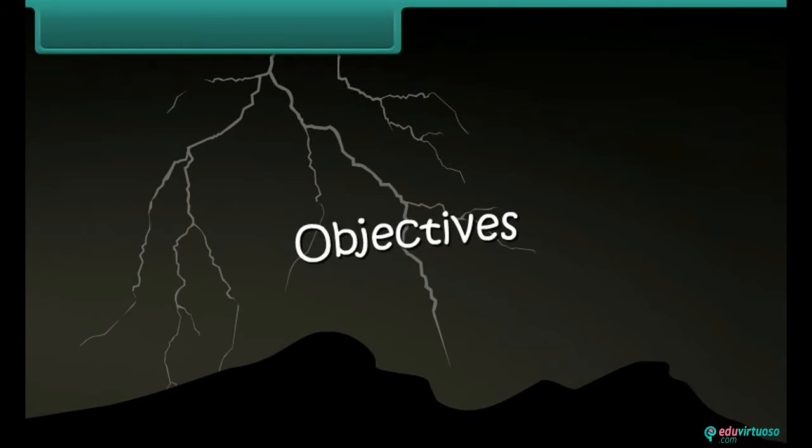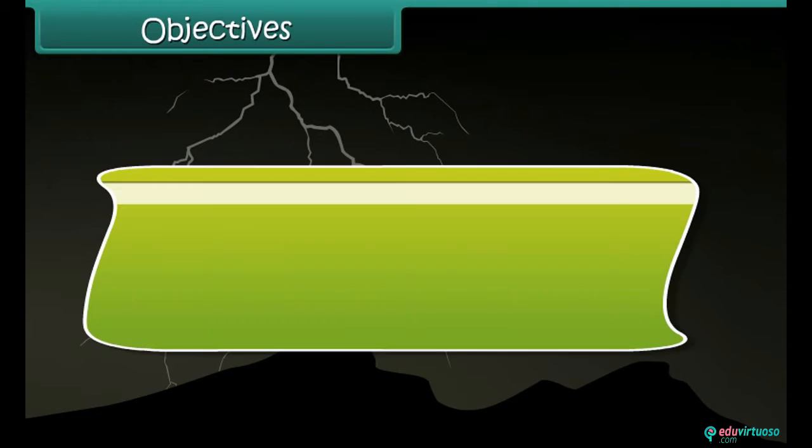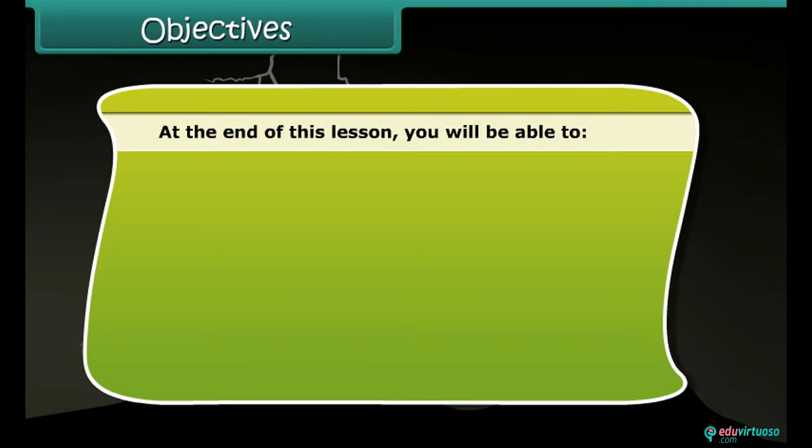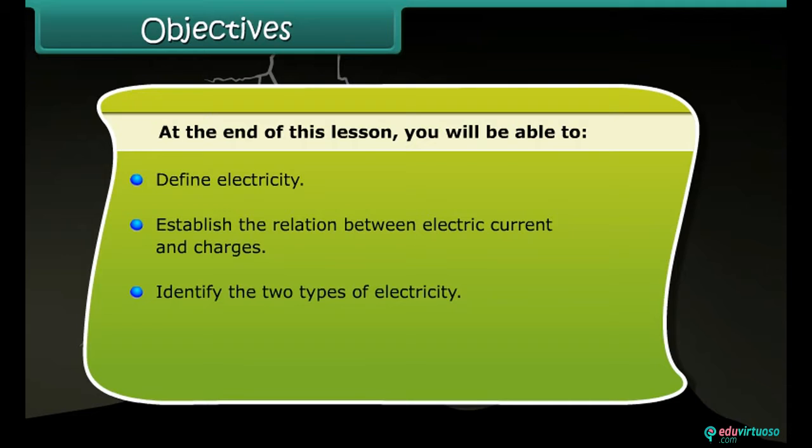Objectives: At the end of this lesson, you will be able to define electricity, establish the relation between electric current and charges, identify the two types of electricity, and define conductors and insulators.